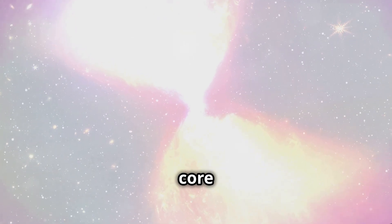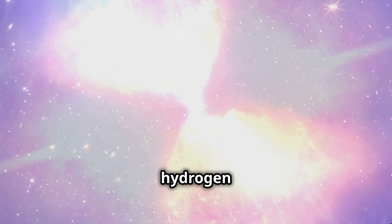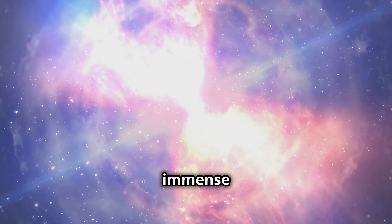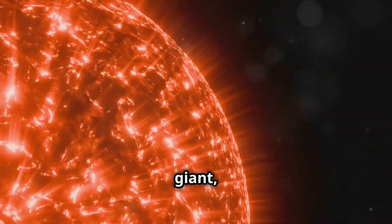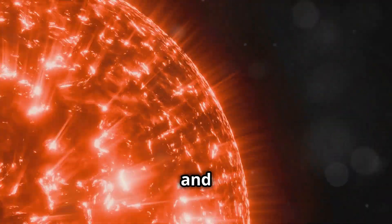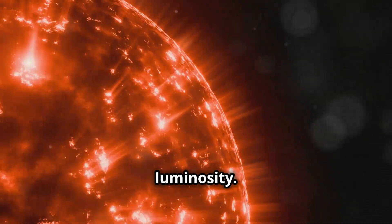The fusion process in the sun's core is what powers it, converting hydrogen into helium and releasing immense energy in the form of light and heat. As the sun becomes a red giant, its outer layers will expand and cool, giving it a reddish appearance and increasing its luminosity.